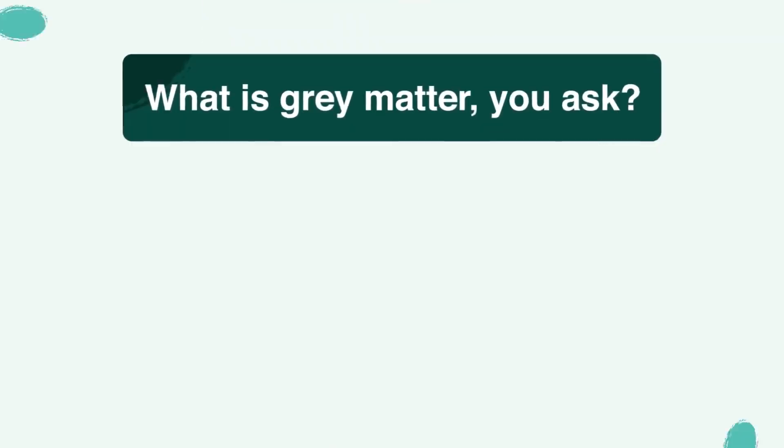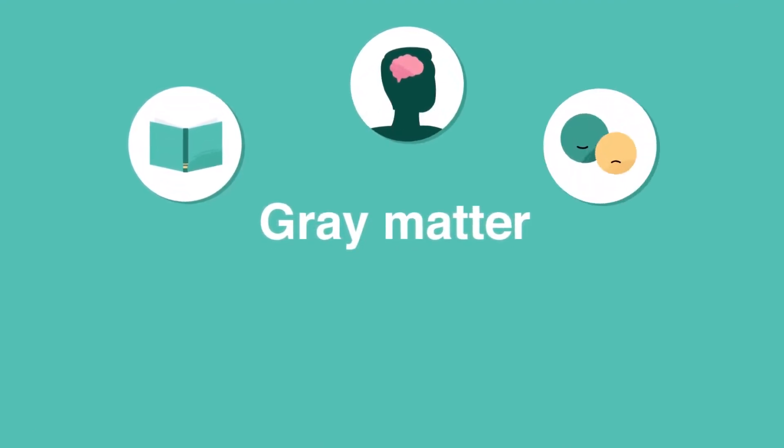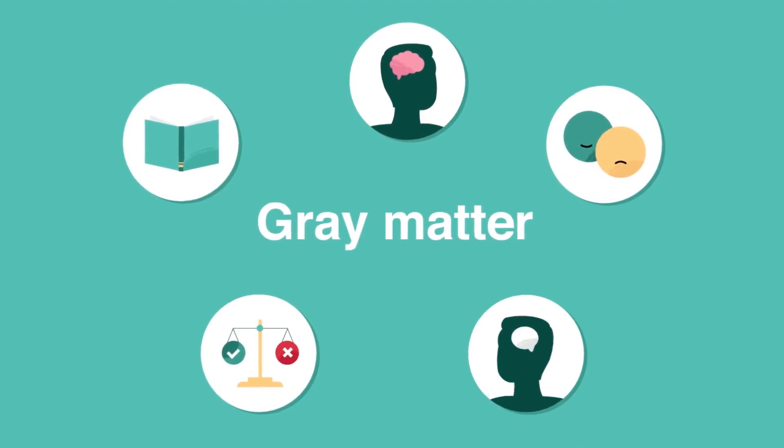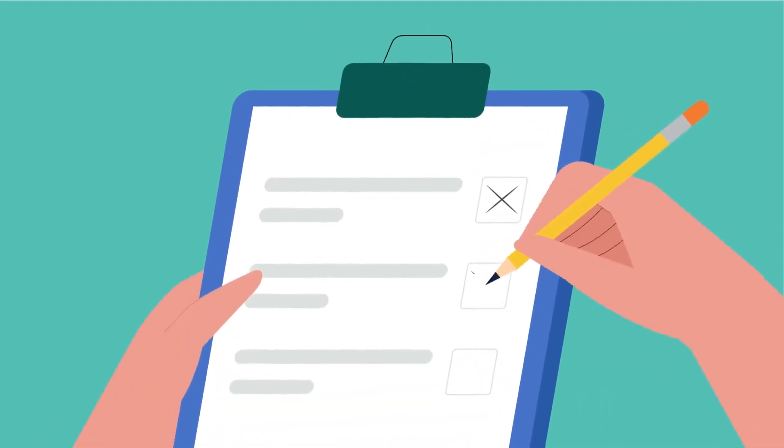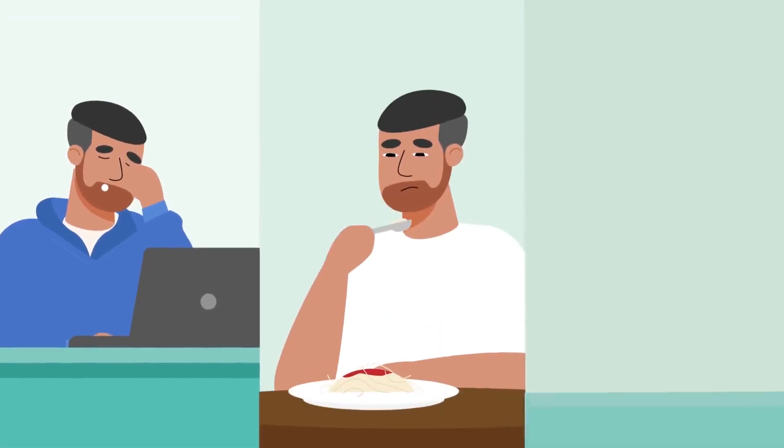What is gray matter, you ask? Well, it's basically the stuff that looks after learning, memory, emotions, decision-making, and self-control, which is why it can be so hard to do everyday tasks when you're depressed, like going to work, eating, and sleeping.